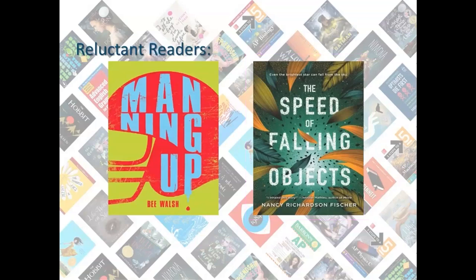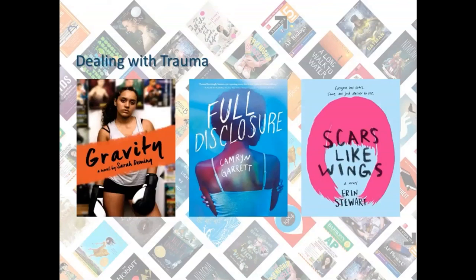Next up, we have some dealing-with-trauma titles — whether it's an abusive household, dealing with an STI, or a harrowing accident. Characters dealing with trauma can help teens learn and empathize with others. Gravity by Sarah Deming, out November 12th, is about a boxing talent who comes from a broken home. She lives with her younger brother and her mom, who inflicts abuse and neglect due to a drinking problem. She's training for the Olympics, but issues at home are mounting too. With these Olympic dreams, Gravity will have to decide what is worth fighting for. The author was an amateur boxer and boxing journalist, so her knowledge of the training process is very evident.